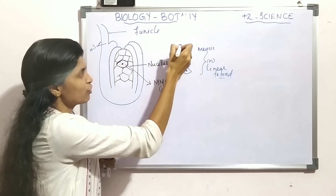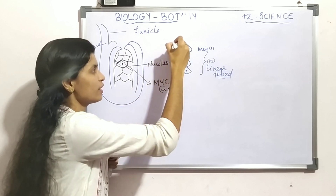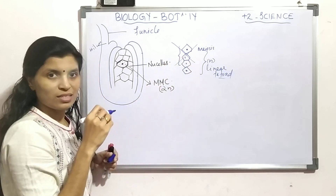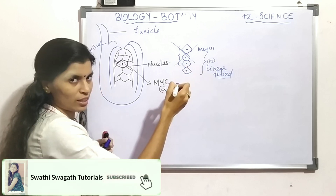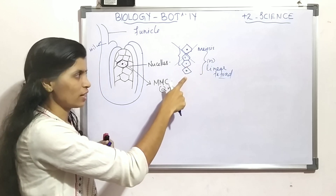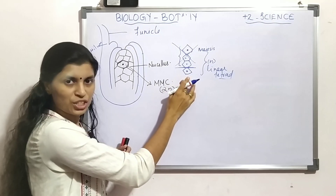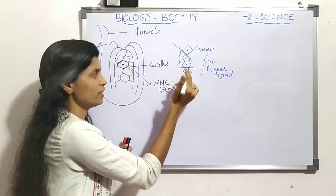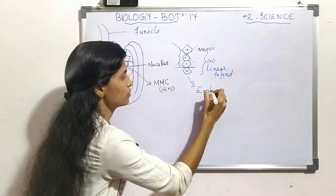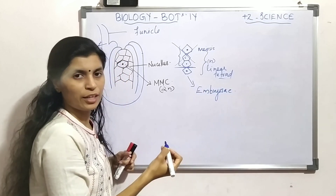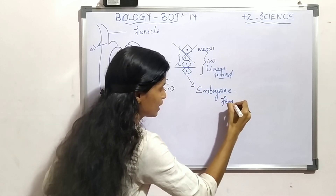Of the 4 cells, 3 degenerate. The remaining one becomes functional. This functional megaspore develops and becomes the embryo sac, also called the female gametophyte.